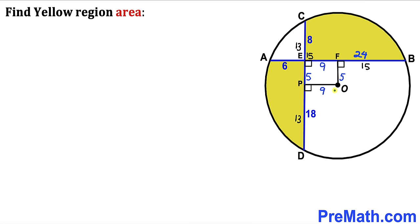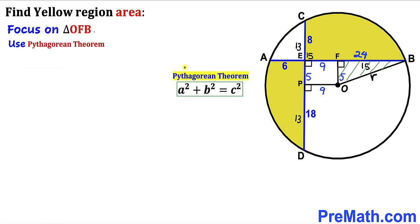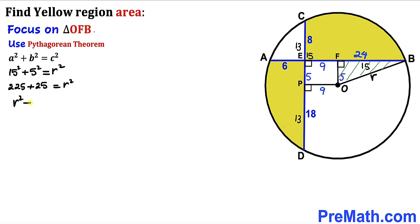Let me connect the center O with point B. As you can see, we get right triangle OFB. OB is the radius of the circle — let's call it lowercase R. Focusing on right triangle OFB whose side lengths are 5, 15, and radius R, we apply the Pythagorean theorem: 15 squared plus 5 squared equals R squared. So R squared turns out to be 250.